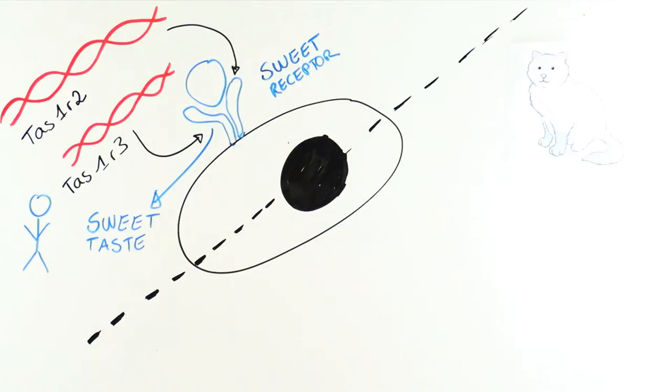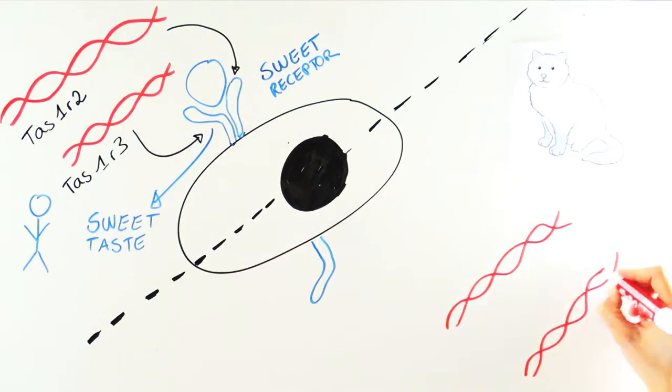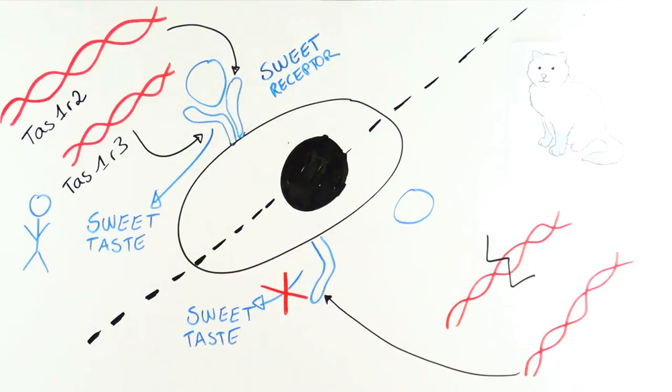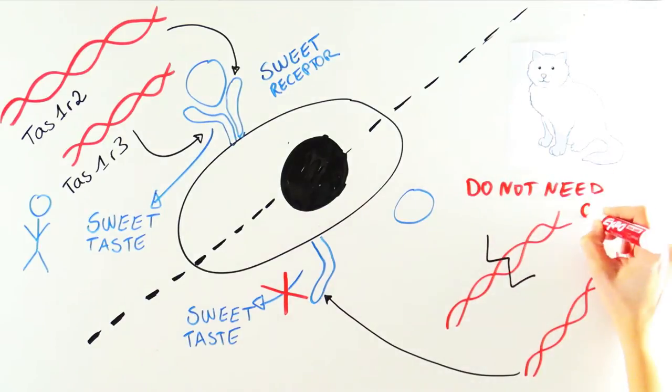Tigers, lions, house cats, you name it. One of their two sweet receptor genes is broken, and they therefore cannot taste anything sweet. But this is actually okay because their carnivorous lifestyle does not depend on eating carbs.